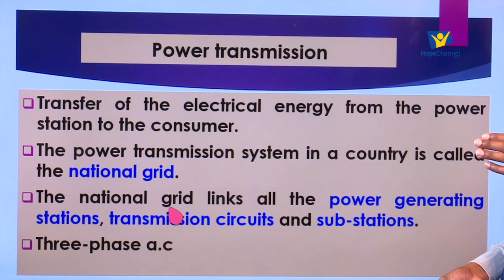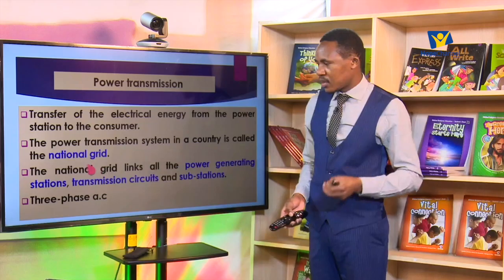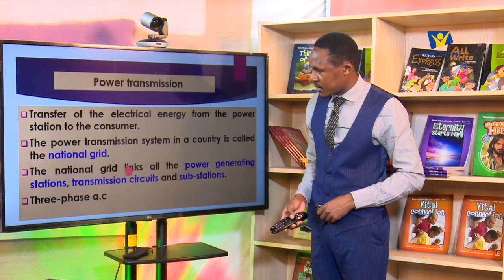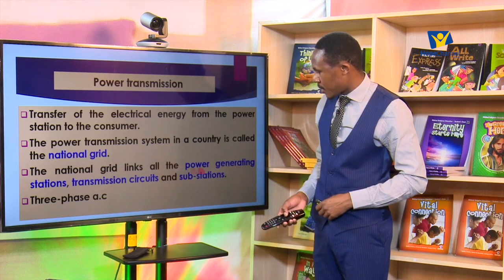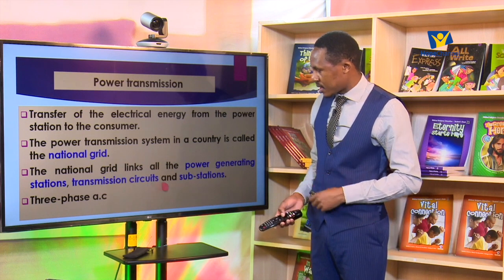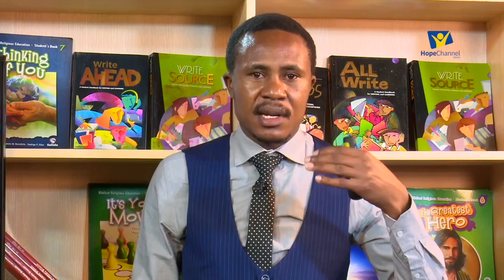What we generate in Ngong is connected to what we generate from Olkaria and from Masinga Dam — all of them together form a national grid. The national grid system is an interconnection between all power stations within a given country, the transmission circuits, and the substations. The reason for this interconnection is that if there is a problem with one generating plant, consumers are not disadvantaged — they can use power from other plants. The national grid ensures constant power supply.